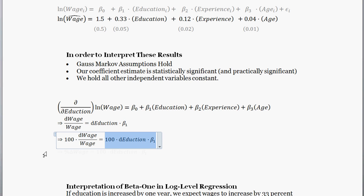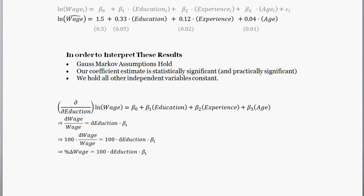Okay, almost there, kind of reinterpreting this in hopefully language we can both understand a little bit more. We get the percent change in wages is equal to 100 times the change in education times beta one. So what is beta one here? What exactly does it mean? It means that if we increase education by one unit, we expect wages to increase by 100 times beta one percent.